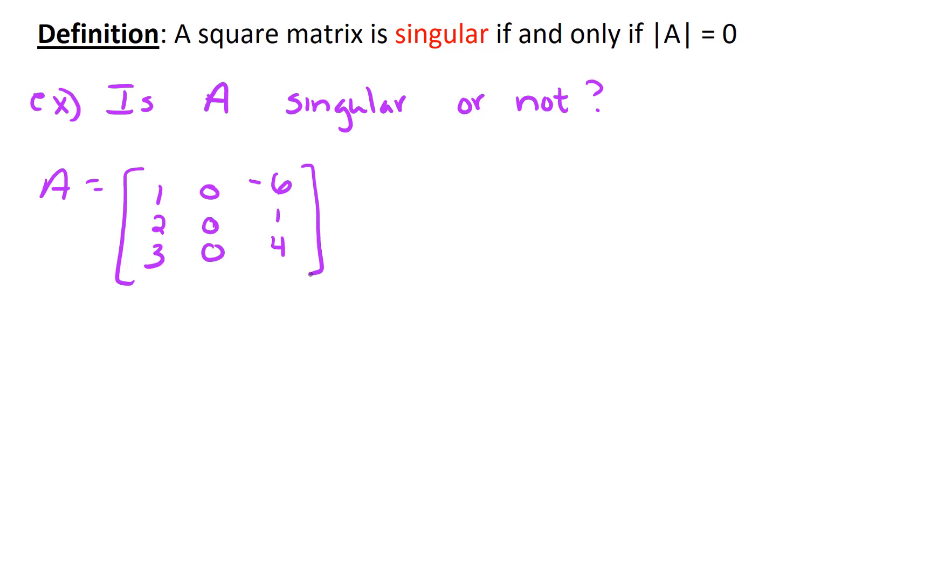So you might be thinking that that column of zeros would force this determinant to be 0, and that intuition is correct. Let's take a look at why that would be the case. So the determinant of A can be found by expanding on any row or any column. In particular, we could expand on the second column. And if we did that, we would find that we have the element of A times negative 1 to the third power times the minor associated with row 1, column 3, and so forth.